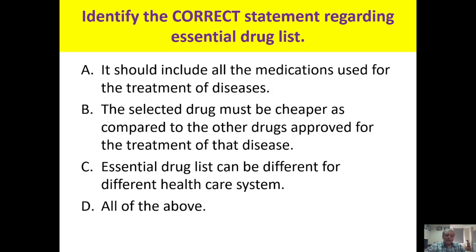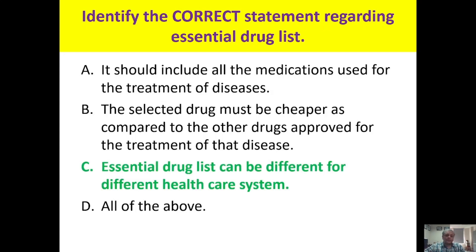The essential drug list can be different for different healthcare systems — yes, because the basic criteria for essential drug list preparation is according to the priority healthcare needs, and these must be different for different setups. That's why option C is the correct answer.